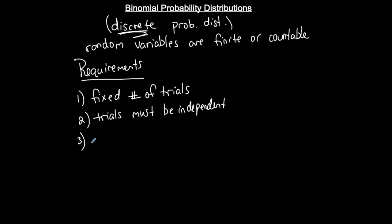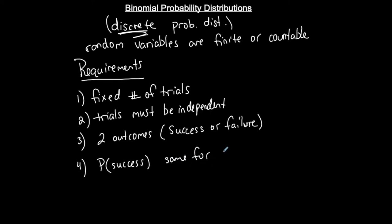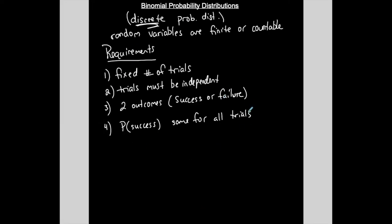Each trial must have exactly two outcomes, which we call success or failure. Success doesn't necessarily have to be the good outcome — it's just the one we're trying to calculate. If there are more than two outcomes, it cannot be binomial. The probability of success per trial must be the same for all trials.